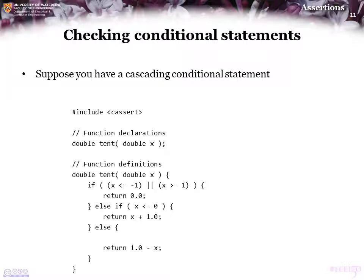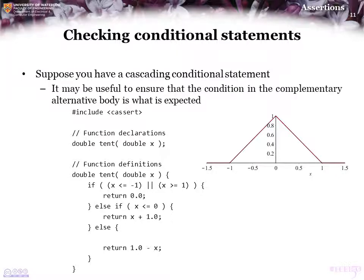Here's an example of the tent function. Now, this tent function here is a mathematical implementation of this function that we see here on the right. And this is, of course, used in engineering on occasion. Now, we have a complementary alternative body here. So, it may actually be useful to ensure that the condition we are expecting in the complementary alternative body is actually what is occurring.